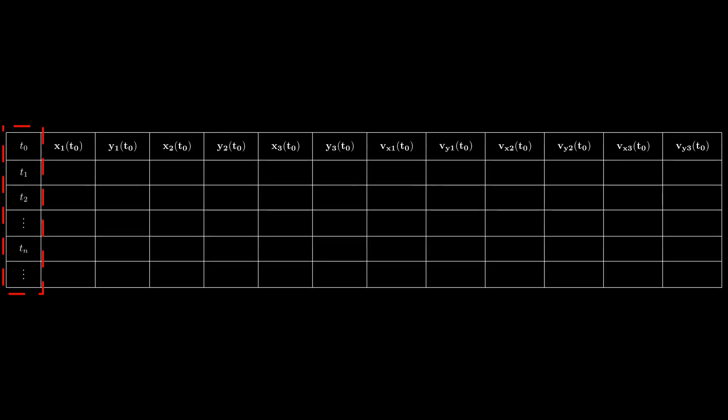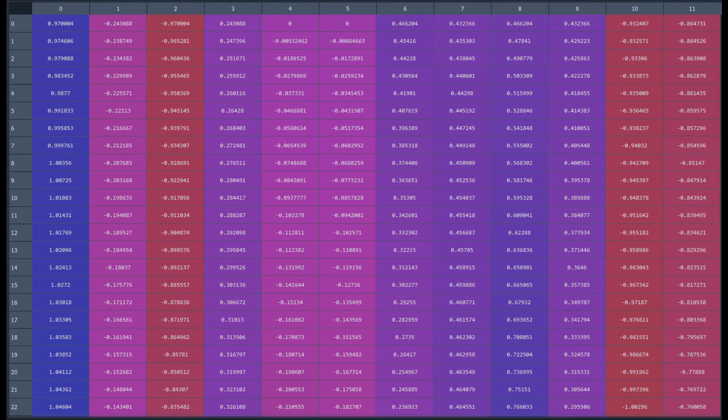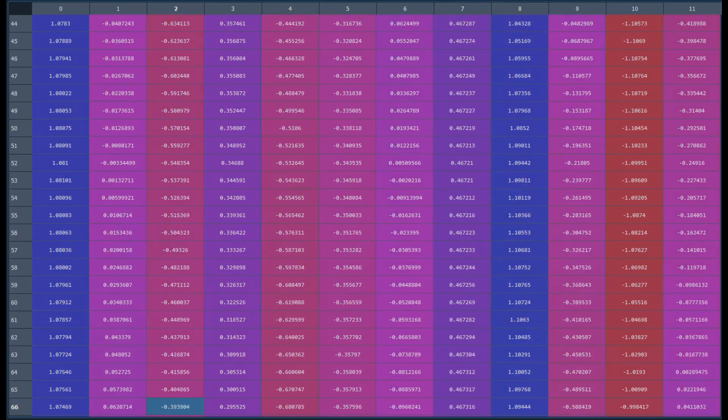So here's how the program works. We start with a table of discrete time values. As an input, the program requires all the initial conditions. In our case, the initial positions and velocities of all three bodies. The output is a table of numbers representing the system's evolution over time. The program begins with the initial values and uses them to calculate the next set of values at time t1. Once those are known, it proceeds to compute the values at time equals t2 and continues this process step by step until the end of the simulation. And what we end up with is a large table of numerical values representing the positions and velocities of all three bodies over time. For example, the first column represents the x position of the first body, the second column the y position of the first body, and so on.